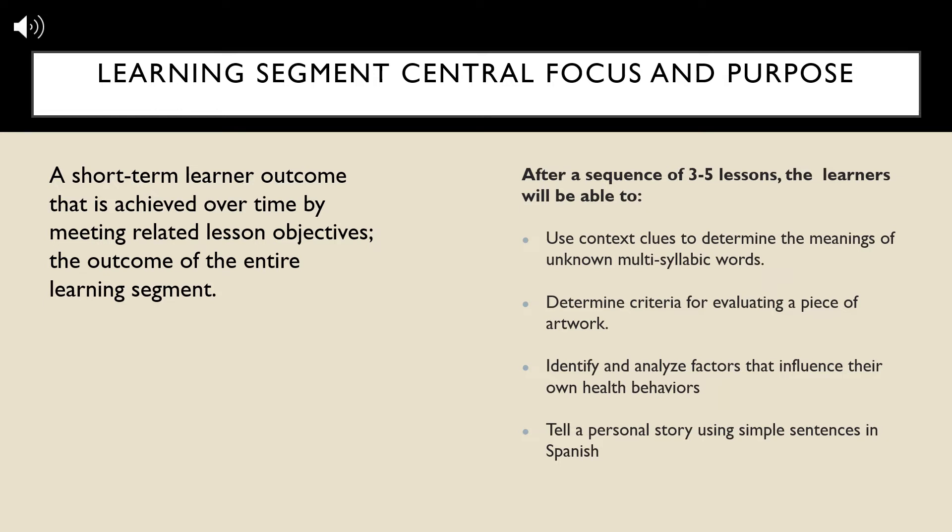The learning segment's central focus and purpose is a short-term learner outcome that is achieved over time by meeting related lesson objectives. This is the outcome of the entire learning segment. In determining the central focus and purpose, think about what the learner should know or be able to do by the end of three to five lessons. For example, should he be able to use context clues to determine the meanings of unknown multi-syllabic words? Should she be able to determine criteria for evaluating a piece of artwork? These are examples of a learning segment's central focus and purpose.